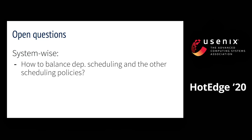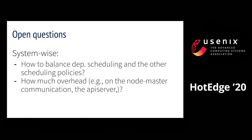For example, how does dependency scheduling interact with other scheduling policies such as bin packing and load balancing? This is because dependency scheduling can lead to over-utilization of nodes that have a large set of popular dependencies, such that the scheduler may always prefer these nodes. Besides, how much overhead does dependency scheduling introduce to Kubernetes systems such as the API server and node-to-master communication? We hope to hear and learn more issues from the audience of this workshop.